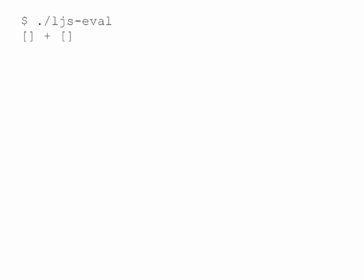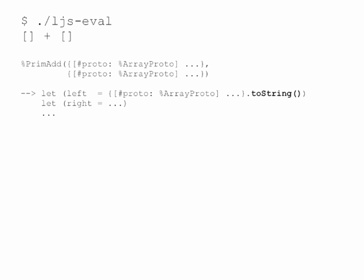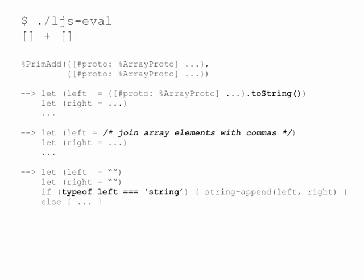Now that we've understood the desugared expression, let's see what happens when we actually evaluate this LambdaJS program. Primadd tells us to invoke the array.toString method on each of these objects to get back a primitive value. Array's toString method concatenates all the elements together with commas in between. For an empty array, this means you get back the empty string. So, we end up with two empty strings, one for each argument.